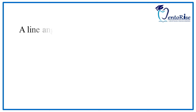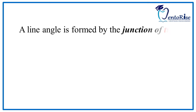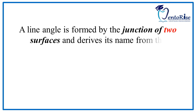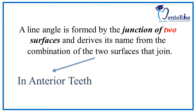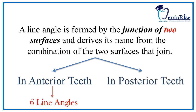Let's deal with line angles first. A line angle is formed by the junction of two surfaces and derives its name from the combination of the two surfaces that join. In the anterior teeth, i.e. incisors and canine, there are six line angles. In the posterior teeth, i.e. premolars and molars, there are eight line angles.